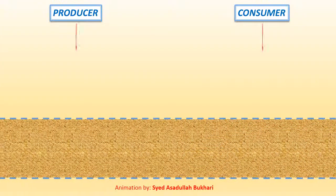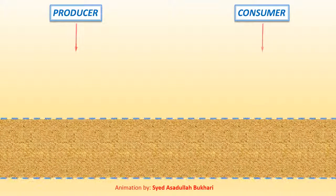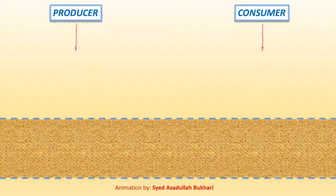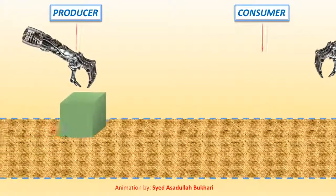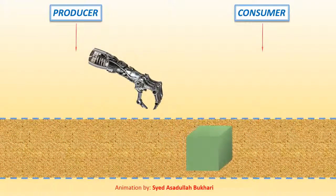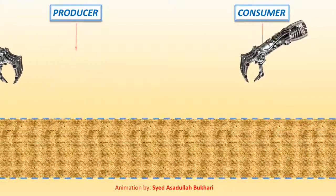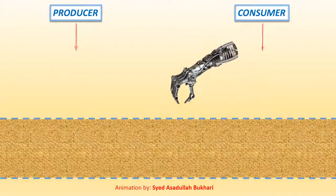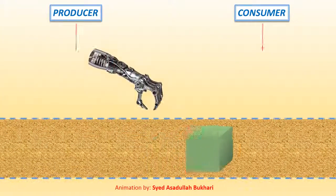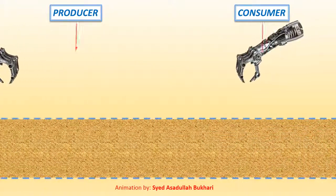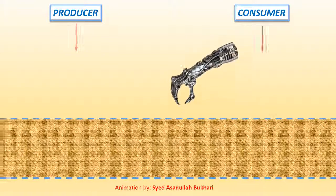Consider this scenario: if there is a little mismatch in the synchronization between two hands, then the consequence can be seen here. This is why correct synchronization is very much required.